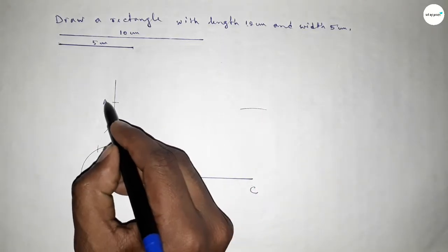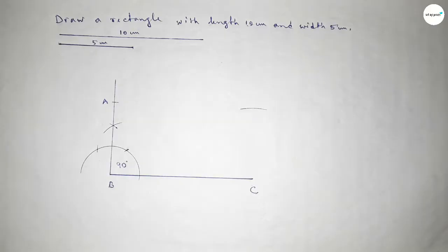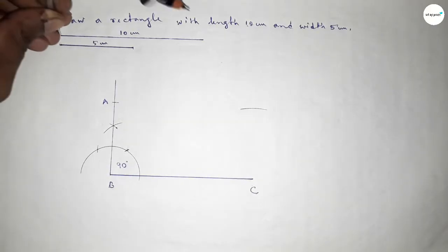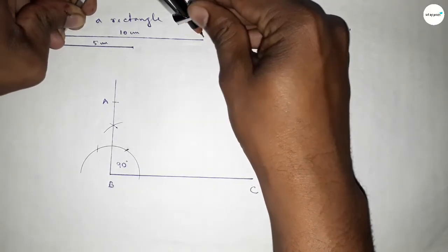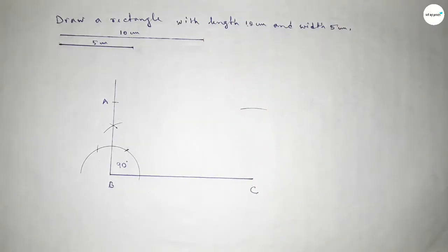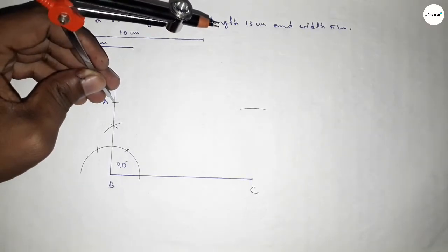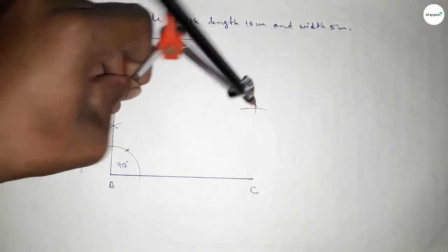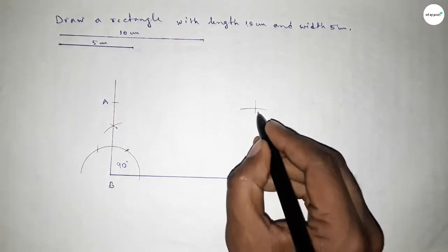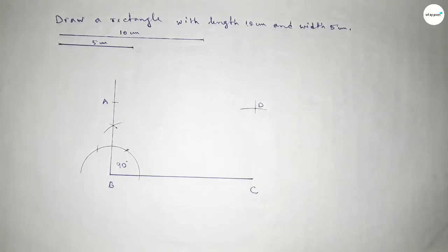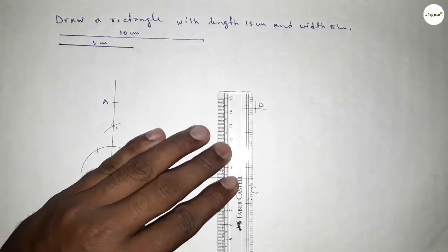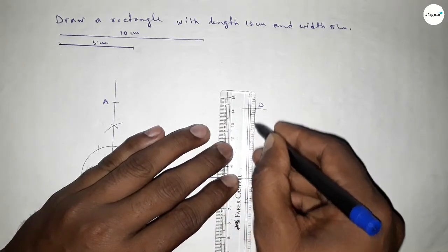Taking a point, now taking the length 10 centimeter by using the compass and putting the compass here and cutting here, so both curves intersect at a point D.